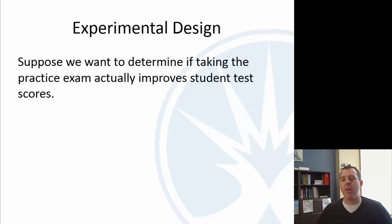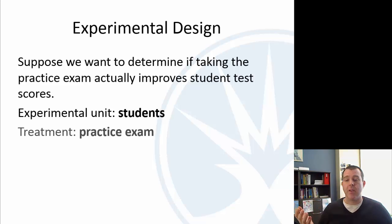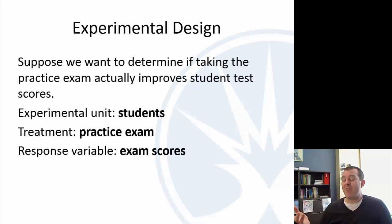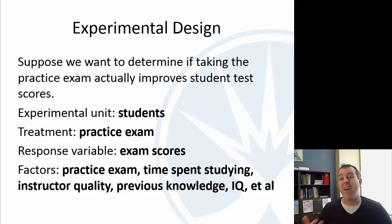Let's look at an example. Suppose we want to determine if taking a practice exam actually improves student test scores. In this case, our experimental units would be students. The treatment we're applying would be the practice exam. The response variable would be those test scores. The factors — well, the practice exam should be a factor, but also how much time they spent studying, the quality of the instructor, whether they remember something from previous courses — all of those things are factors as well, because they could affect the student's exam scores.